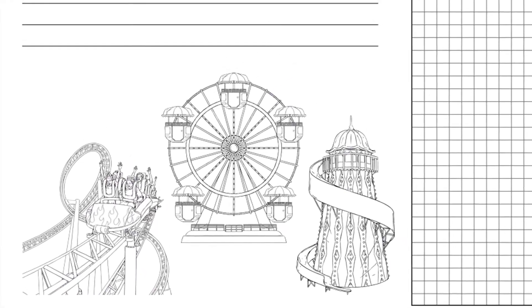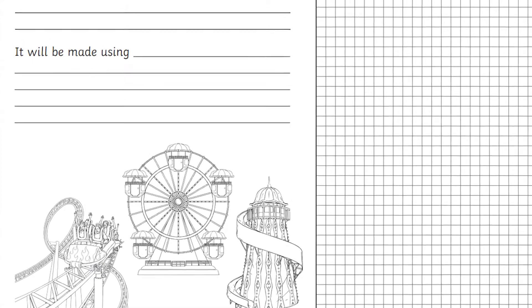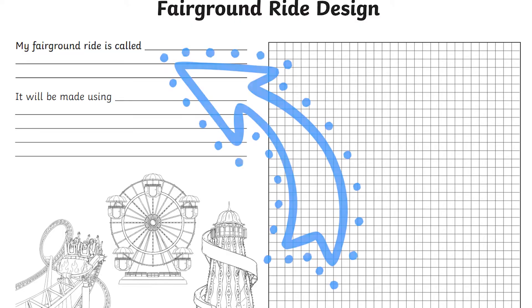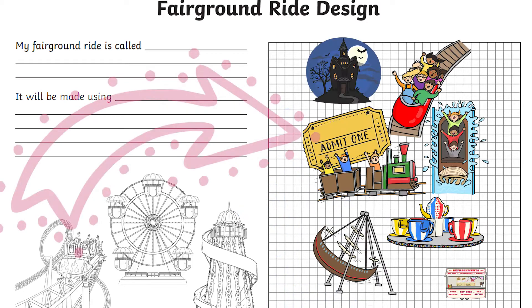Continue with this design a fairground ride activity sheet as a way for pupils to plan their own design and technology projects. Children can design their own ride and plan what they will need to make it. This is perfect for teaching pulleys and levers in Key Stage 2. The design sheet includes spaces for children to write the name of their ride and what they will need to make it, as well as a space for graph paper to plan out their ride.